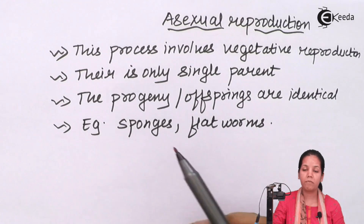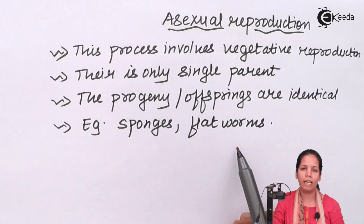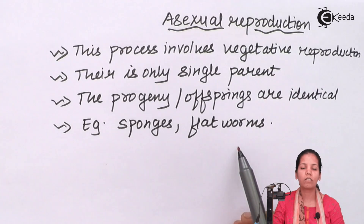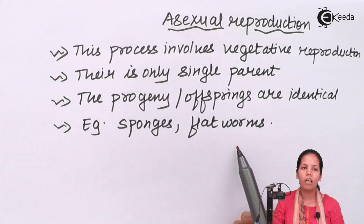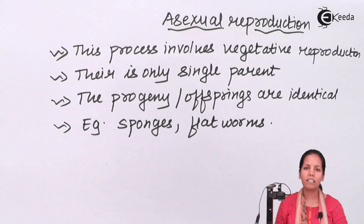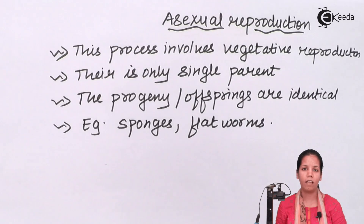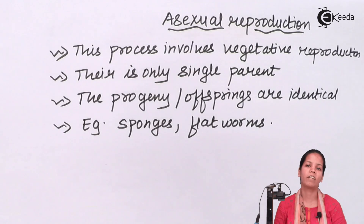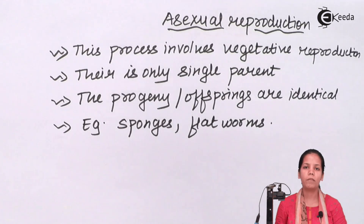Sponges and flatworms are all such organisms that actually carry out the process of asexual reproduction. Asexual reproduction does add a little bit of variation here and there, but sexual reproduction is the one that gives more hereditary characteristics. Also, human beings never do asexual reproduction.